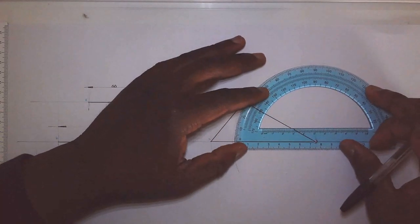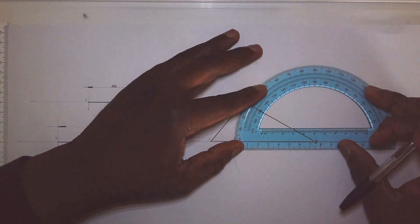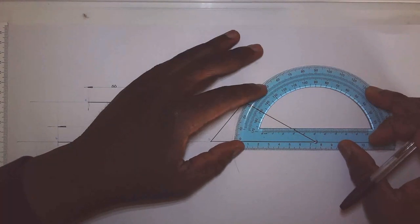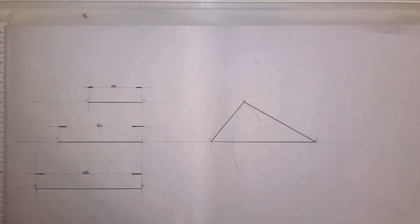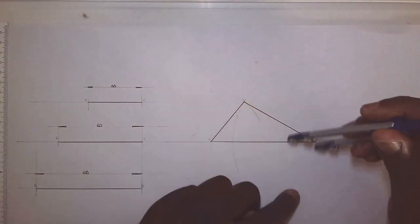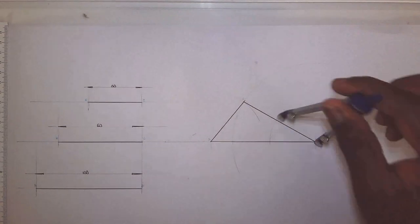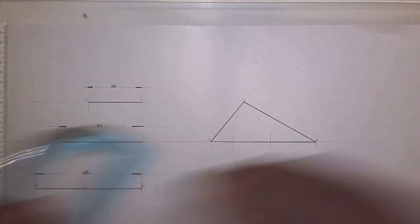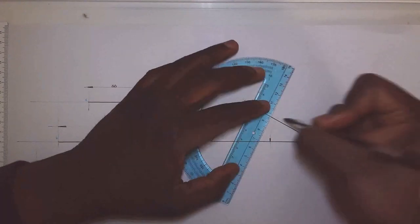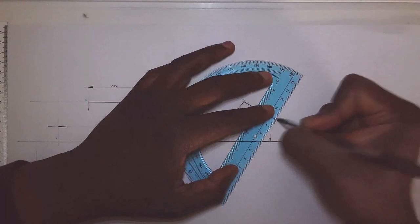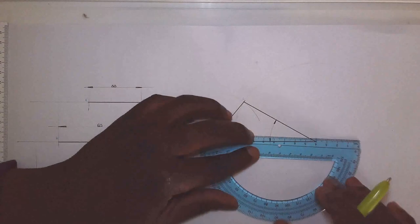If you want to, you can use the protractor to measure what that angle is. So for this particular angle, this is reading almost 30 degrees. Yeah, so that is reading approximately 30 degrees. I'm going to dimension the base angle like so, do our arrowheads, and that measures 30.